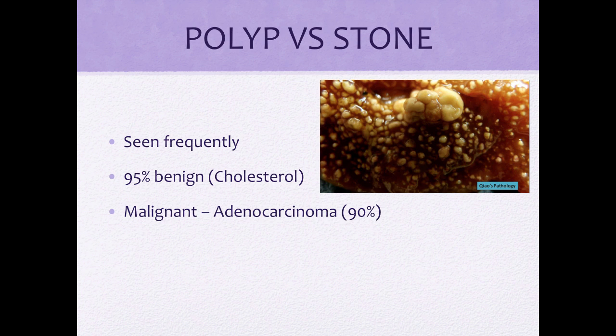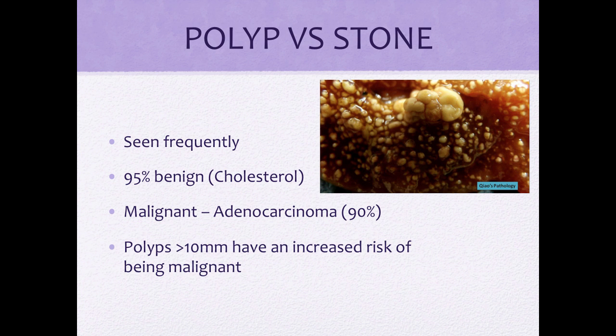Malignant ones are usually adenocarcinoma. Something to remember: malignant polyps are usually greater than 10 millimeters and typically have internal vascularity. All polyps can be associated with biliary pain.